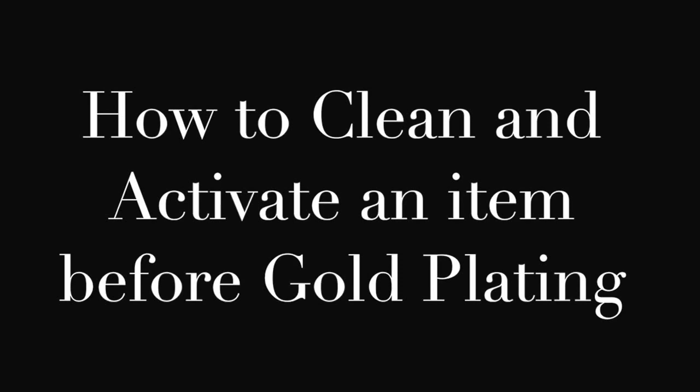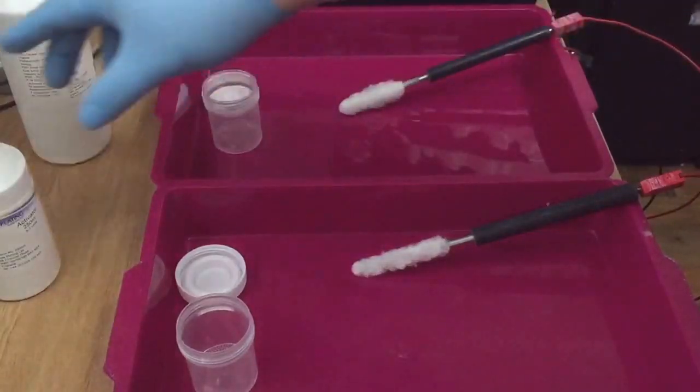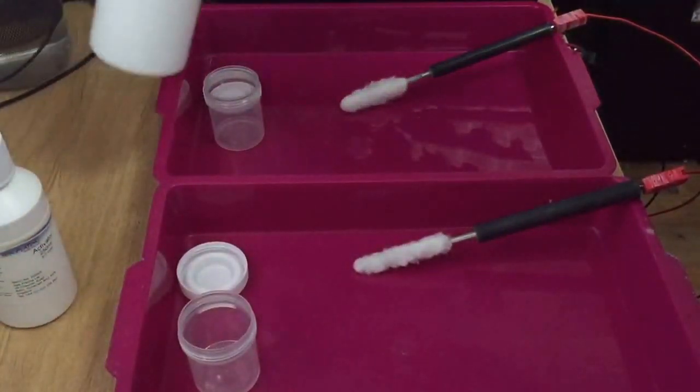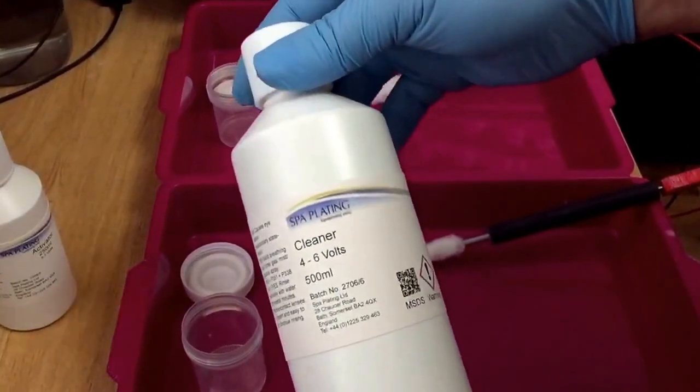Hi there, in this video I want to show you how to clean and activate an item before gold plating. The item in this case is stainless steel, very shiny, highly polished stainless steel. I'll show you three ways to activate. First, we use activator and cleaner.